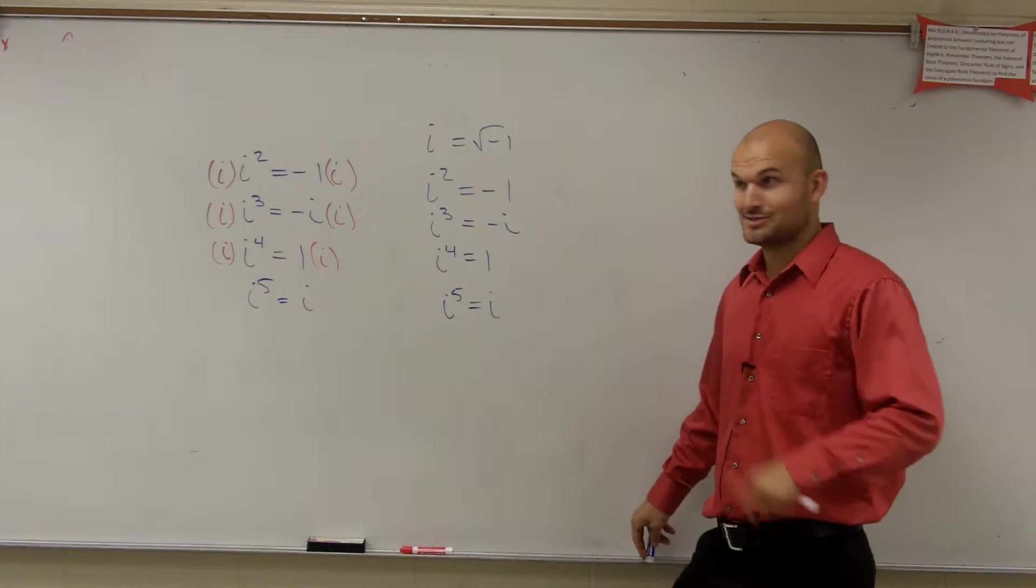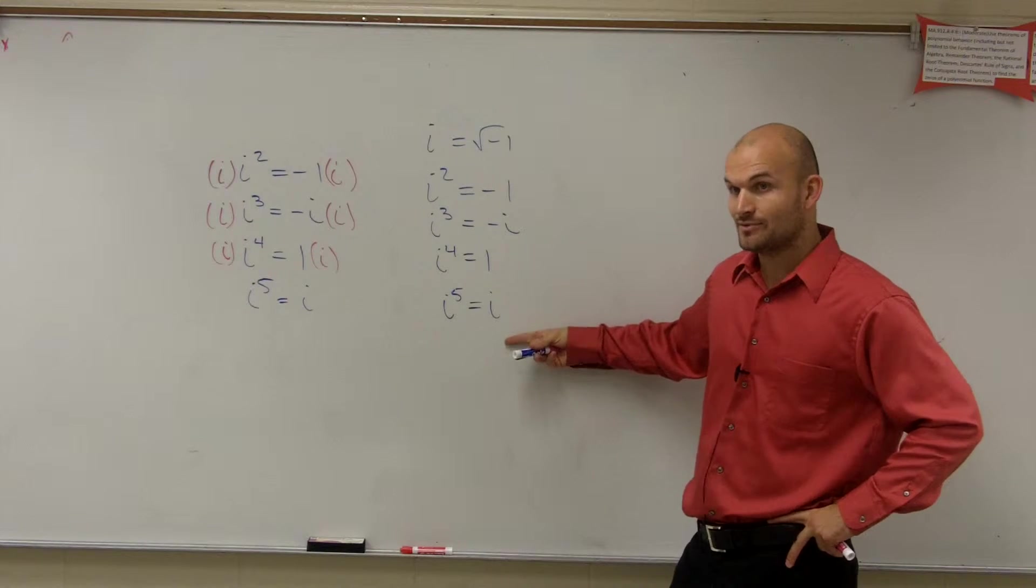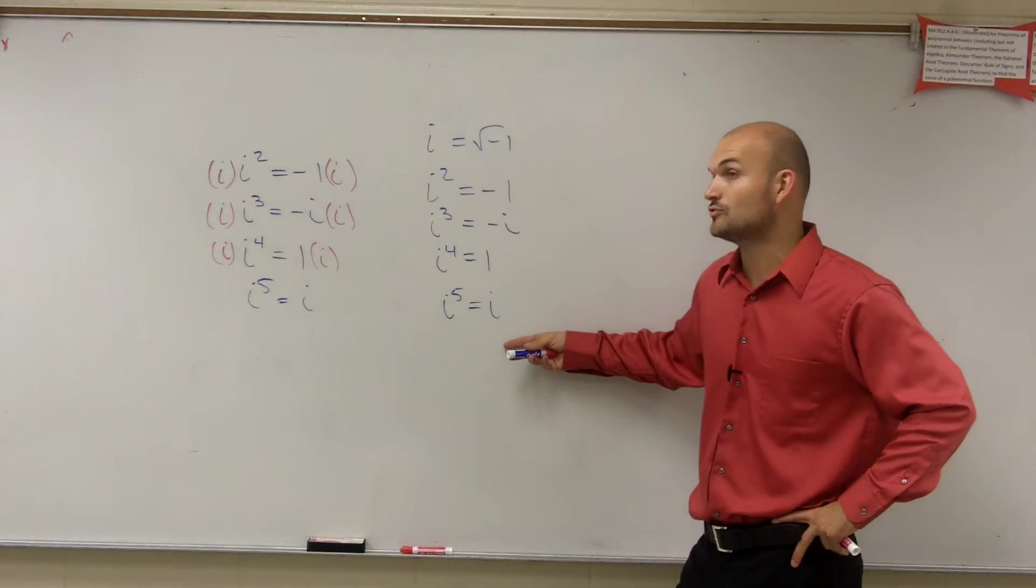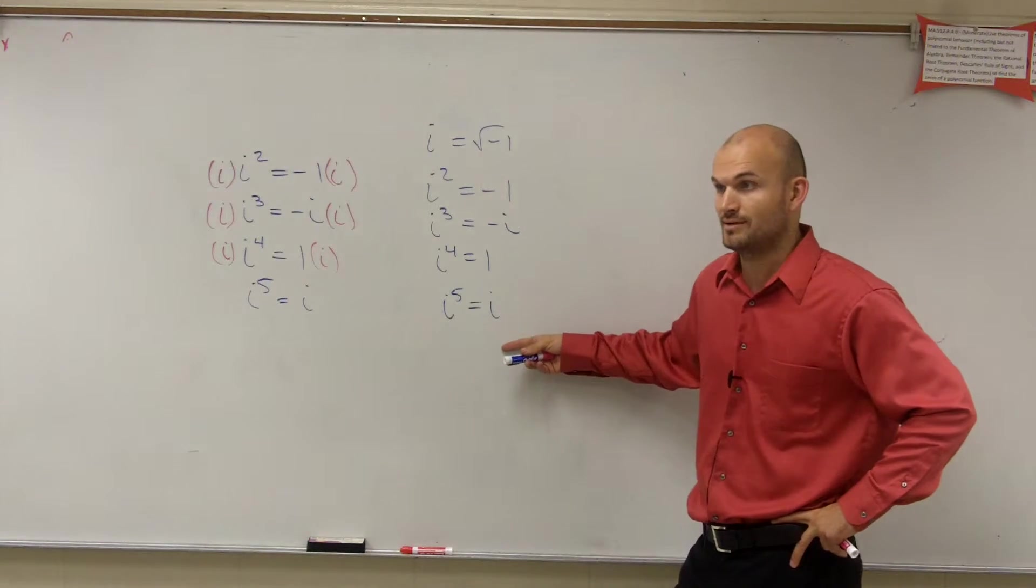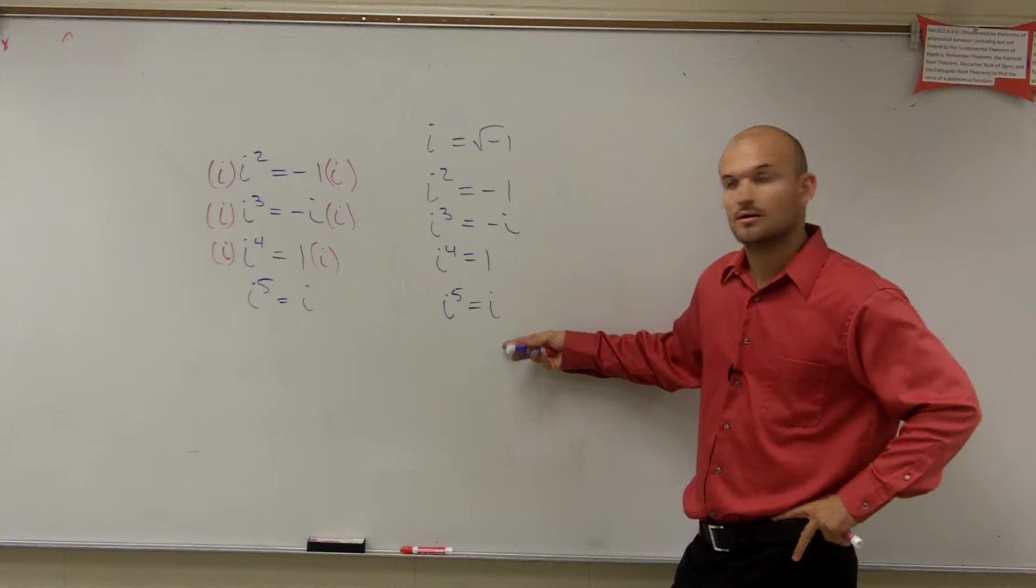So, yes, hinting to your point, if i to the fourth is one, i to the eighth, we just went through six, seven, and eight, i to the eighth is one, what would you reason i to the twelfth would be? One. Think about it.